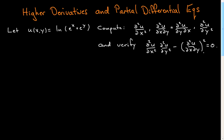So let's do this example problem. We'll start by computing the x derivative. The x derivative of this function — log will give me 1 over e to the x plus e to the y. We have to use the chain rule for one variable, so I differentiate e to the x with respect to x, which simply gives me e to the x.